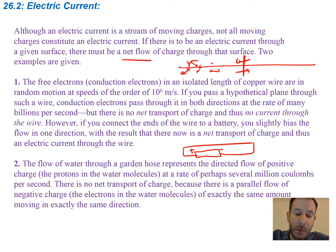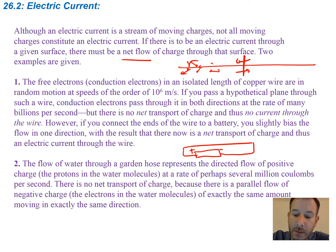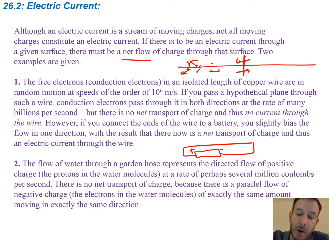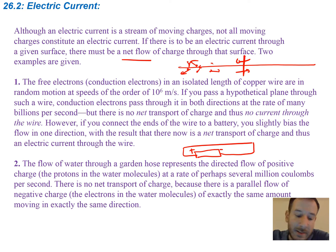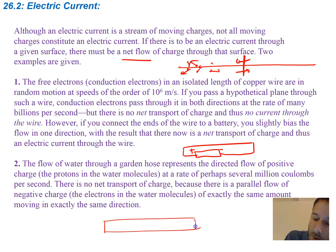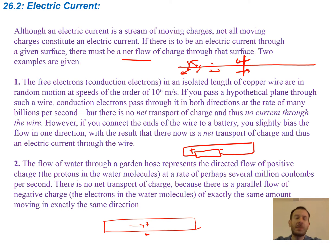Here's another example. The flow of water through a garden hose represents the directed flow of positive charge — the protons in the water molecules — at a rate of perhaps several million coulombs per second. However, there's no net transport of charge because there's a parallel flow of negative charge, the electrons in the water molecules, moving in exactly the same direction in the exact same amount. In this case, you have a hose with water flowing through it: a bunch of positive charges in the molecules, but also all the negative charges going together. There's no imbalance of charges, so this does not constitute a current.